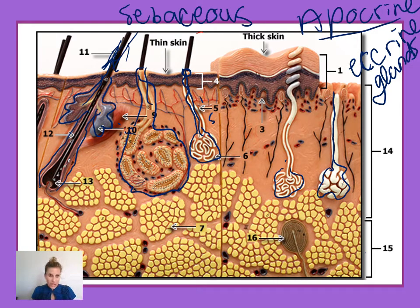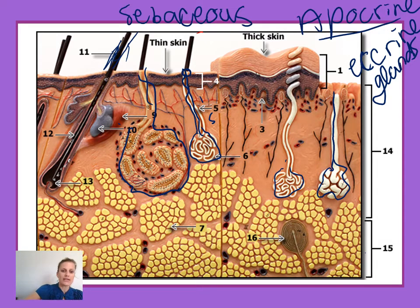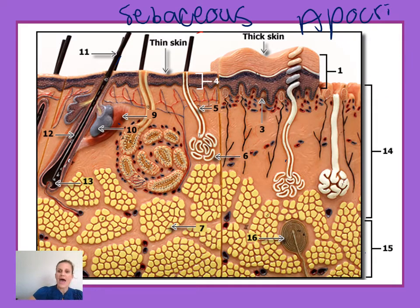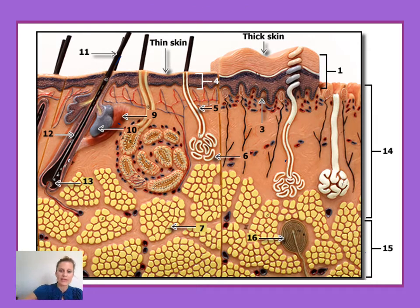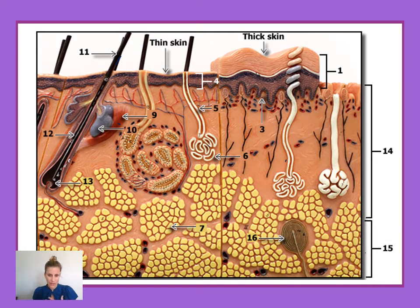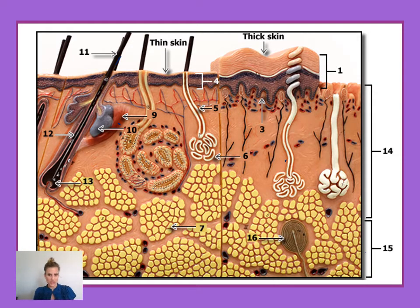So we have hair, the erector pili muscle connected to the hair, and the hair follicle surrounding the hair. We also have multiple types of glands including sebaceous, apocrine, and eccrine glands. Additionally, there are multiple types of sensory receptors present in the skin that provide senses like touch, pressure, pain, texture, vibration, and tickle — all of the things you could possibly feel when someone touches the surface of your skin.